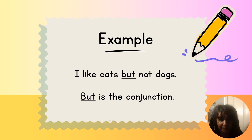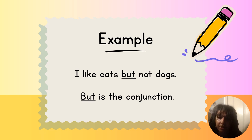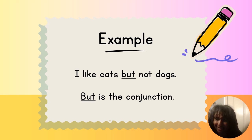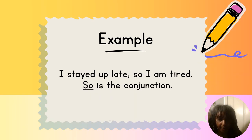Here's another word we call a conjunction, or a connector: the word 'but.' For example: 'I like cats but not dogs.' Talk with your partner and think about a sentence where you could use the word 'but.'